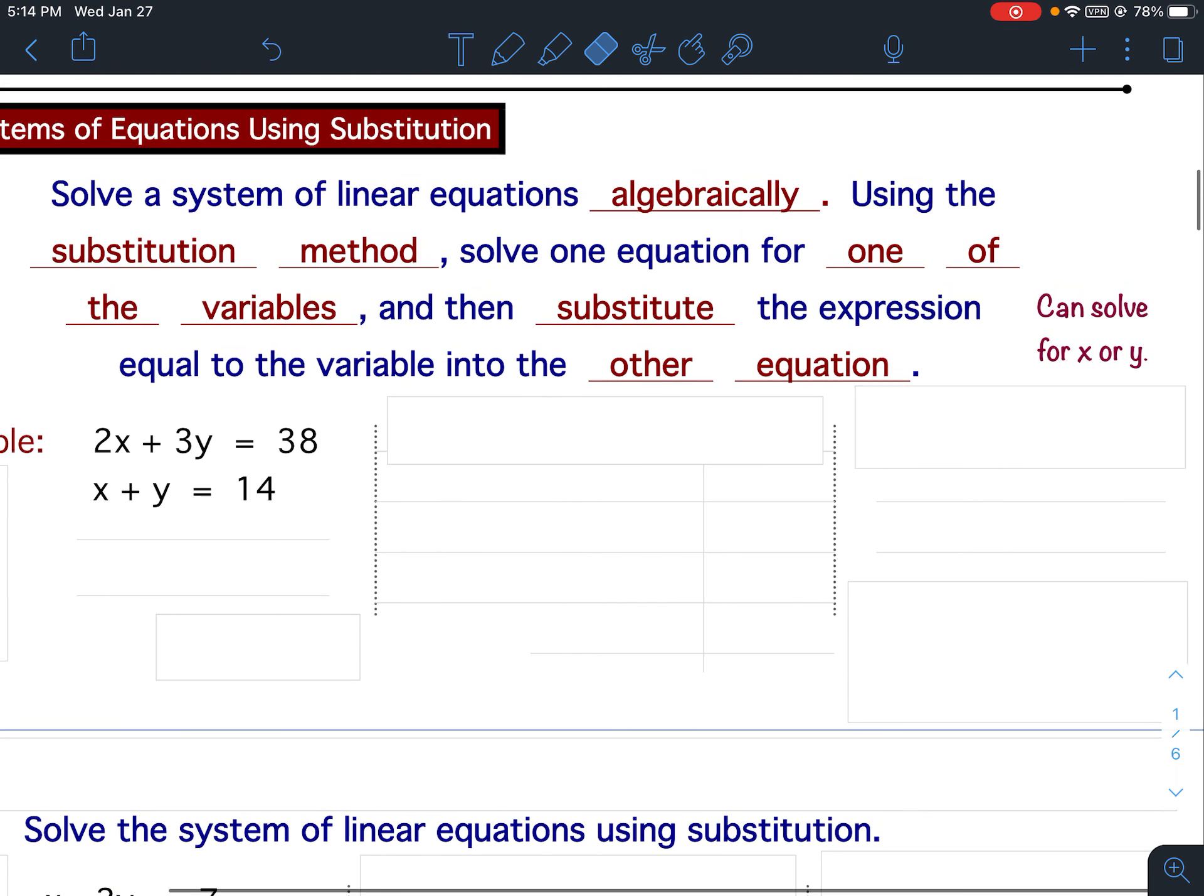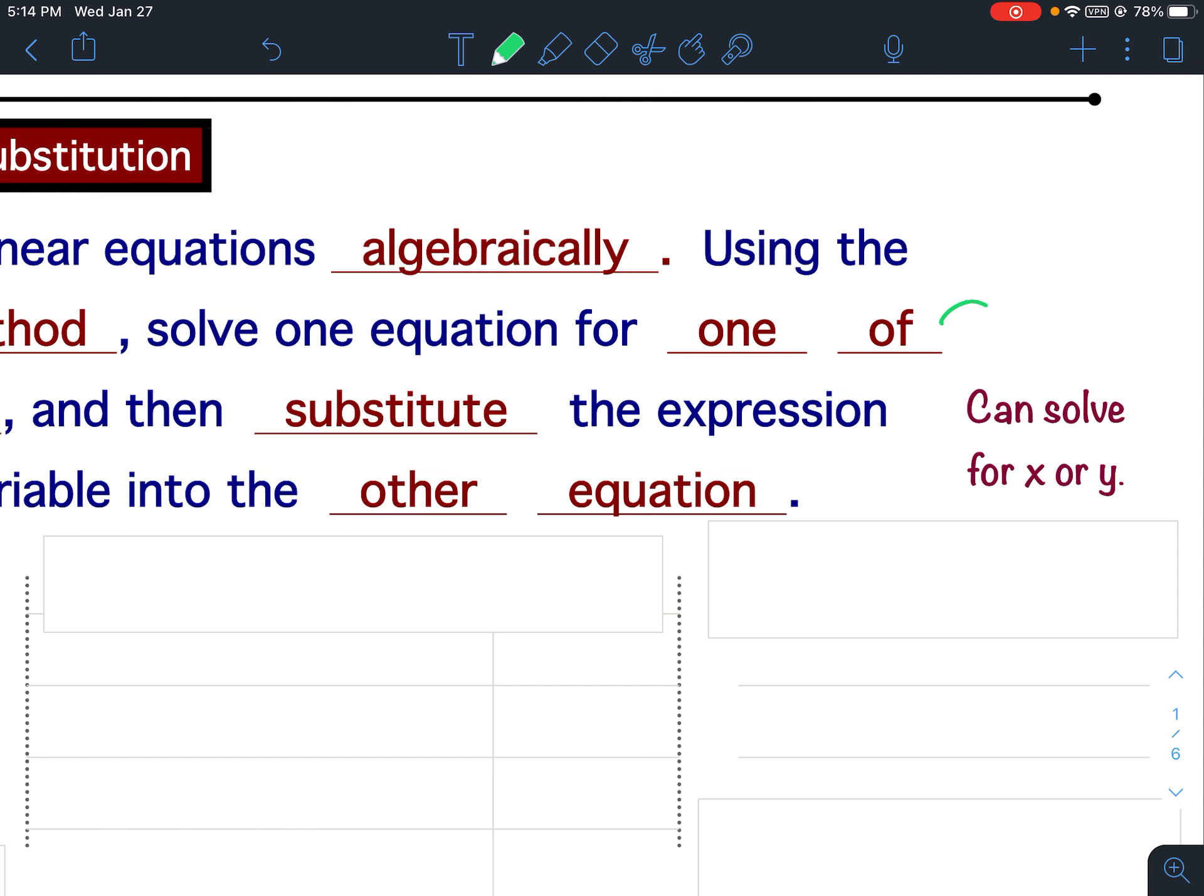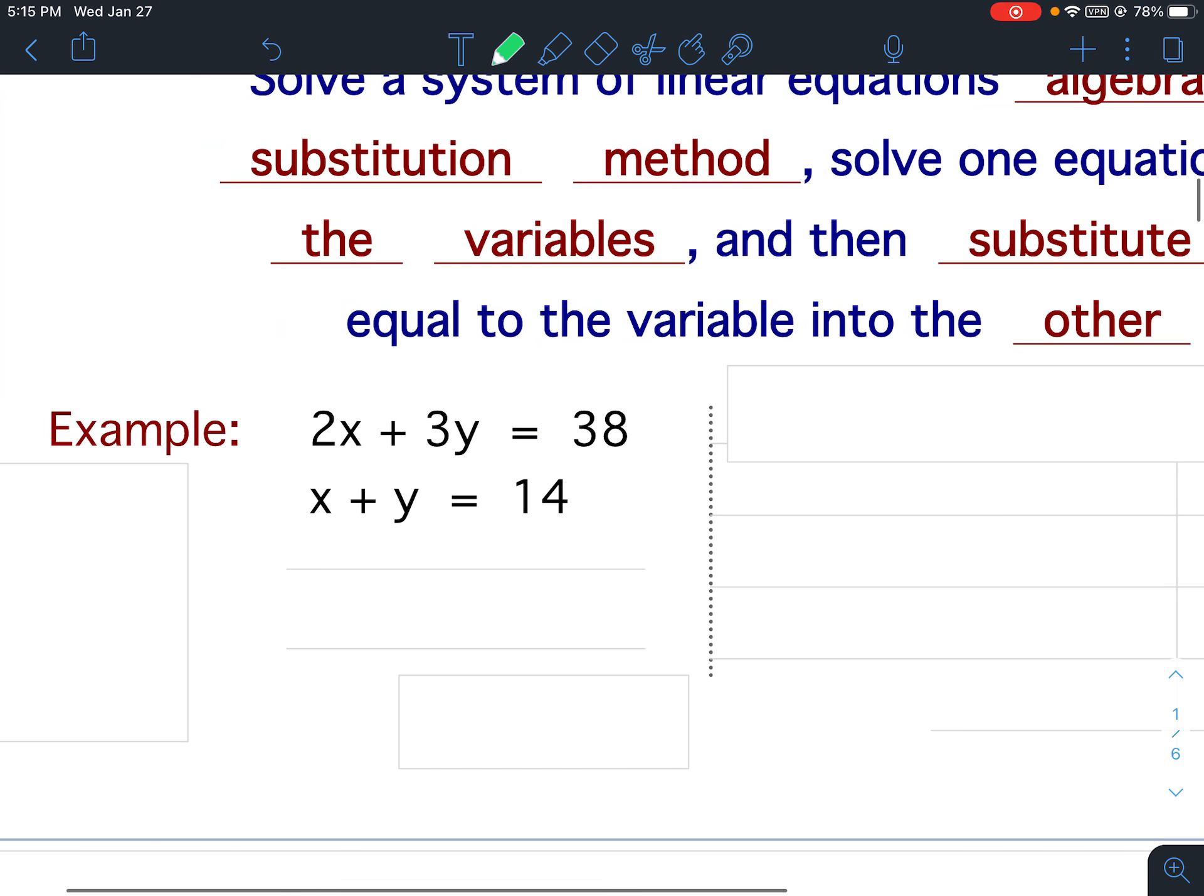So I would like you to write down, go over here off to the side, that you can solve for x or y. So when it says solve for one of the variables, whatever one's easier, x or y, that's the one you should solve for. Alright, so let's look at this first example. The top equation is 2x plus 3y equals 38. The bottom equation is x plus y equals 14. So knowing which variable to solve for is half the battle. Because the rest of it you'll be fine with.